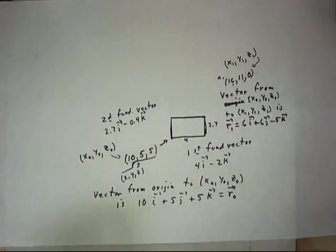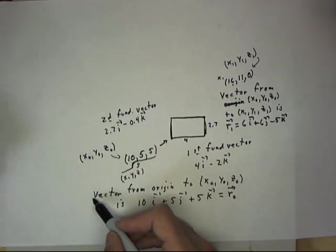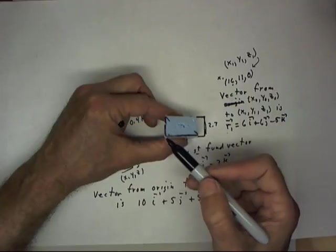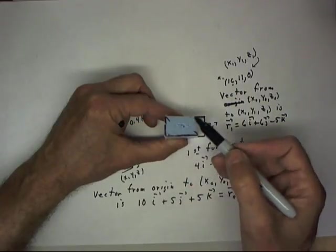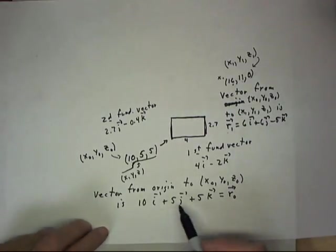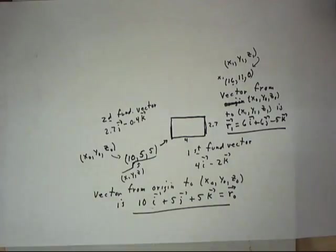So again, we think of the origin being over here someplace, a vector from the origin up to our x-naught, y-naught, z-naught point, and then a vector from the x-naught, y-naught, z-naught point down to sixteen, eleven, zero. And here's one of our vectors. Here's the other vector.